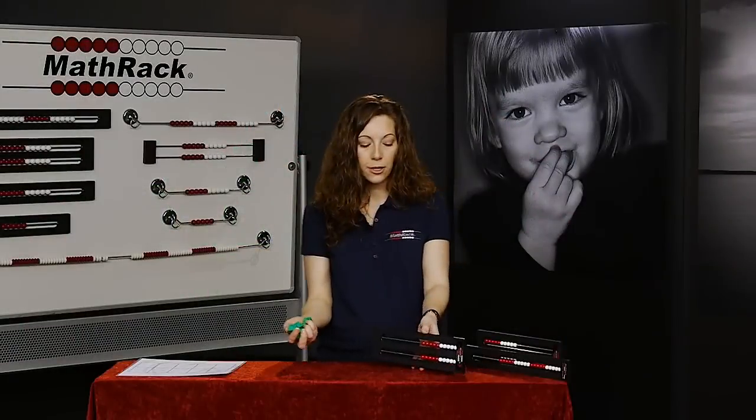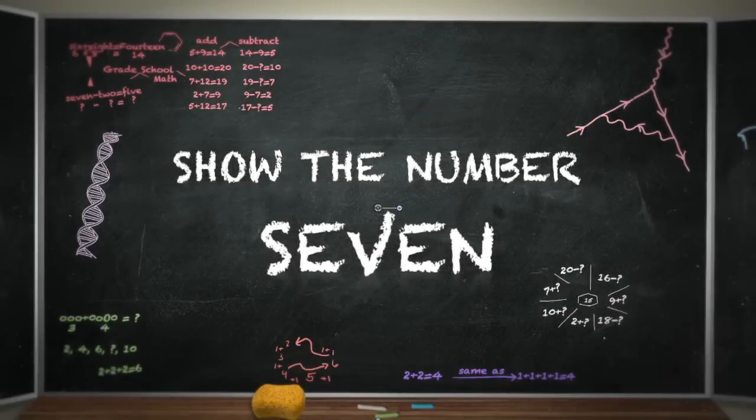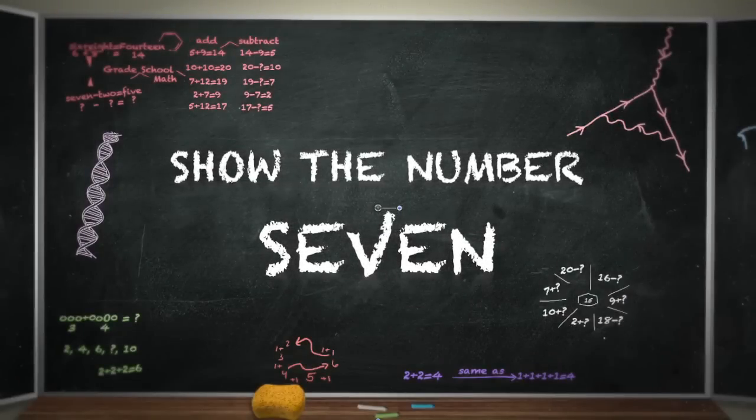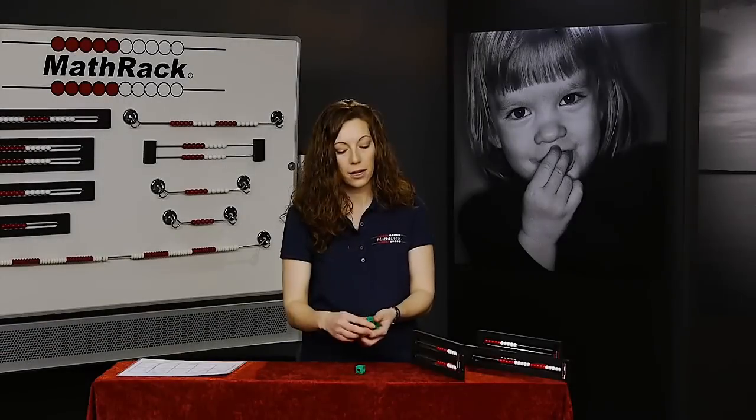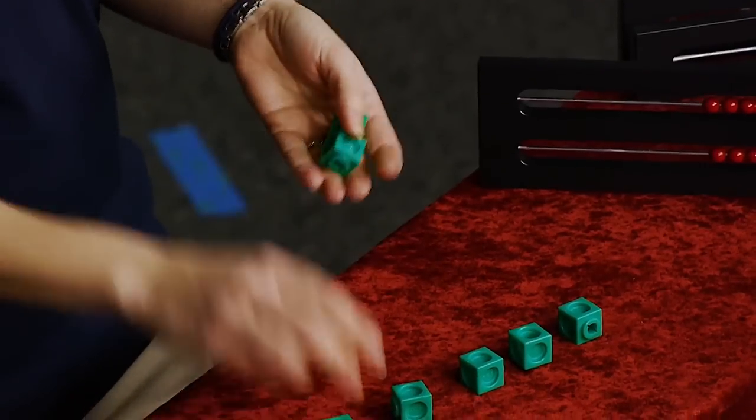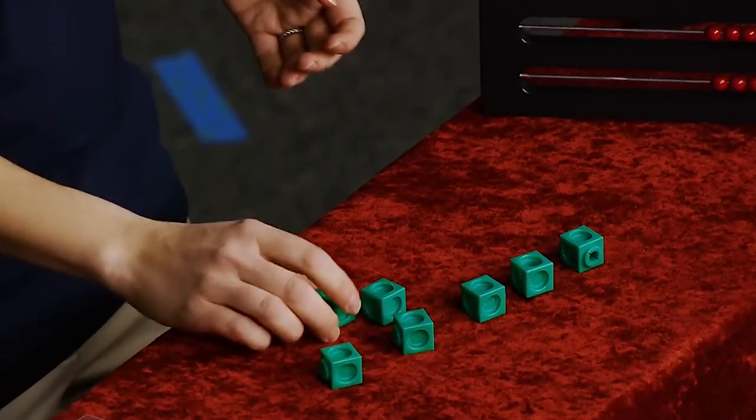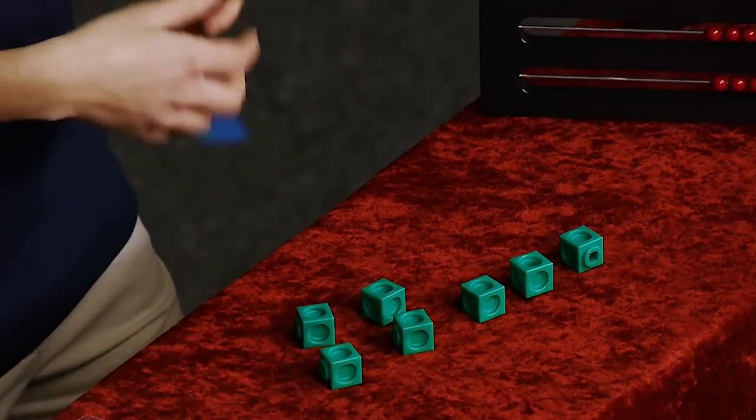So if we have these cubes and we're asking a student to show the number seven, for instance, when they're showing seven they count out one, two, three, four, five, six, and seven. Right? They get a lot of practice with the counting and they see that seven is seven things, but it really doesn't build any more mathematical relationships for our students.